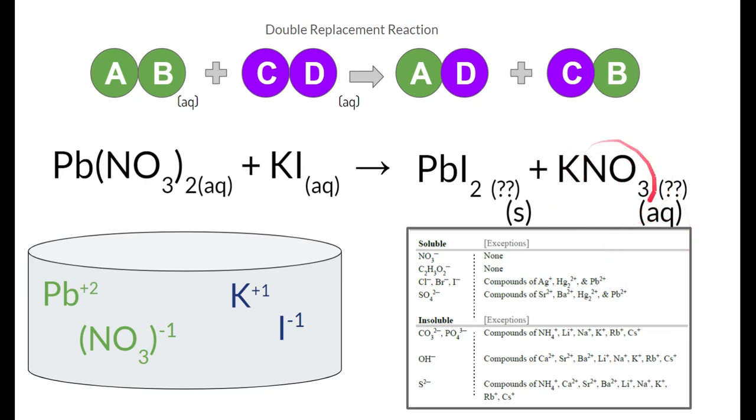Over here, potassium nitrate. Nitrate's right here, and it's soluble as well. And there's no exception. So it doesn't matter if it's attached to potassium. So this substance over here is aqueous. So that's how we use solubility rules. But what is this really saying here?